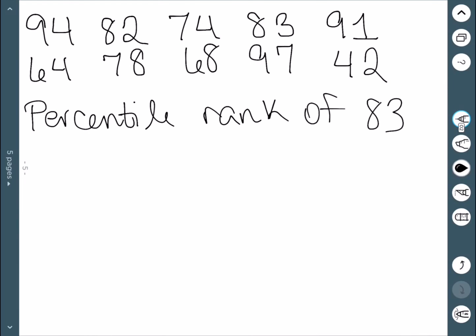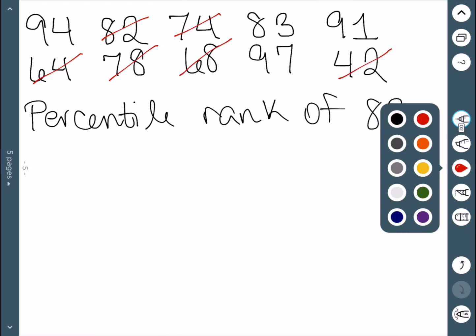To do that, we're going to start by figuring out how many numbers are below 83. I have 1, 2, 3, 4, 5, 6 numbers below 83.